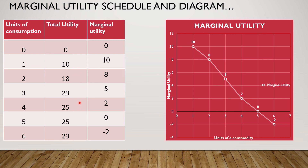To plot the marginal utility diagram shown on the right, we consider the first column and the third column — units of consumption and marginal utility. We plot the points and then join them to get the marginal utility curve.